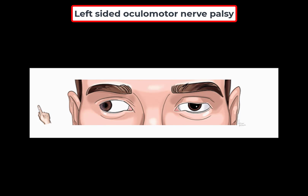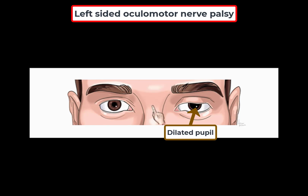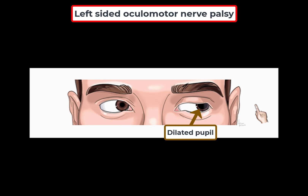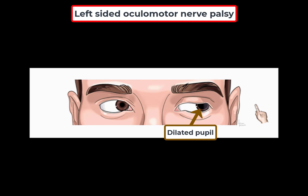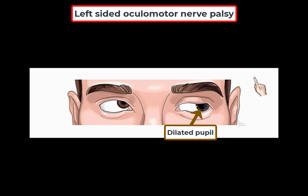With oculomotor nerve damage, the parasympathetic response can no longer constrict the pupil, so it becomes fixed and dilated, not constricting in response to light. The pupil is often affected when the cause is compression of the third cranial nerve. When the pupil is not affected, the cause is often inadequate blood flow — seen in microangiopathies, as in diabetes or hypertension — because ischemia to the vasa nervorum affects the central part of the nerve, which carries somatomotor fibers only, while the peripheral part carries autonomic fibers.